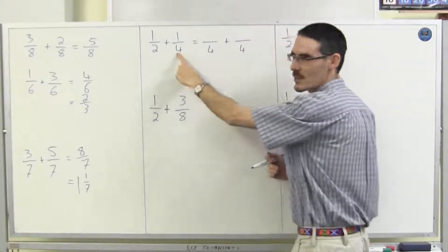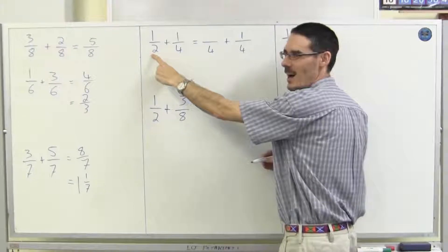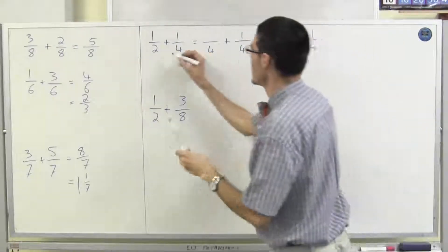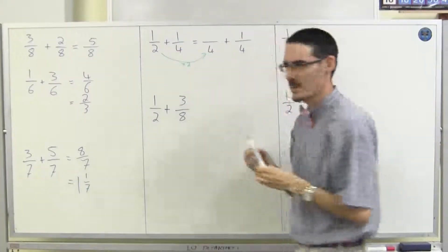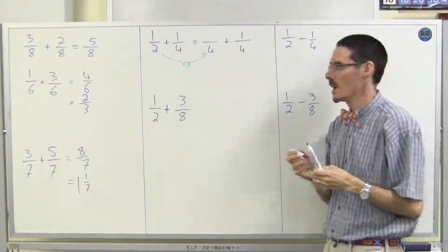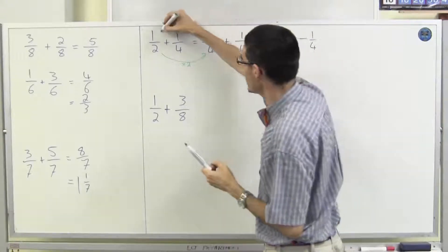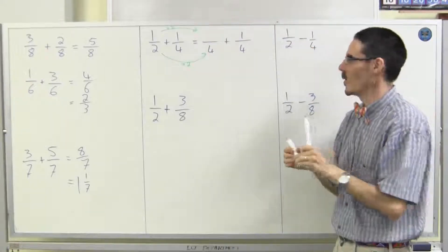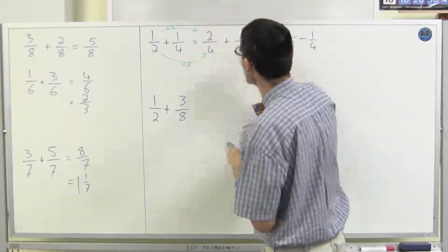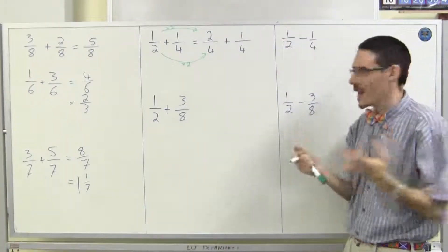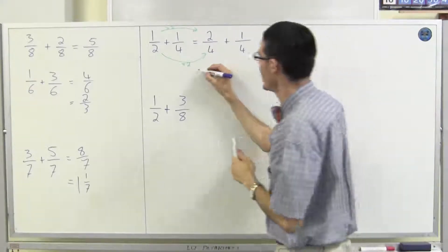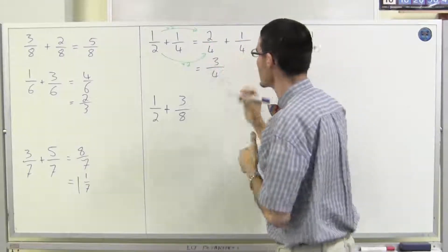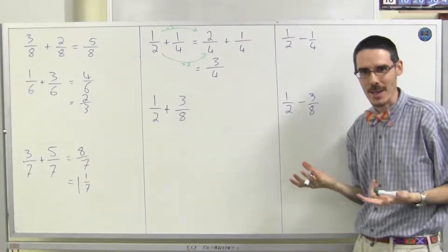So, this one's already a quarter. This one's halves. What did I need a two to turn into four? I had to multiply by two. And if I multiply the bottom by two, I have to also multiply the top by two. Well, one times two makes two. And now I've got two fractions with the same denominator. So, now I'm going to have two plus one making three quarters, which is what we expected anyway.